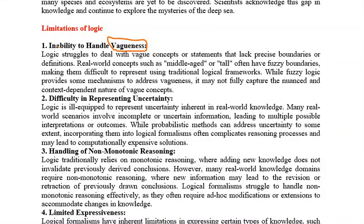The first limitation of logic is the inability to handle vagueness. Vagueness, which I explained in my previous video, is a lack of clearly defining a concept. If you do not define a concept clearly, it is considered vagueness. For example, the concept of mid-age — people from 20 to 50 or 60 years are considered mid-age in one culture.